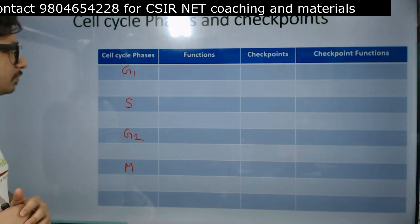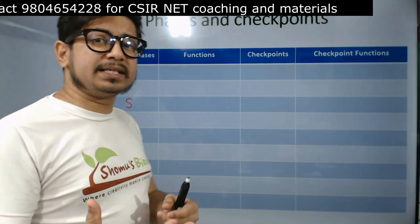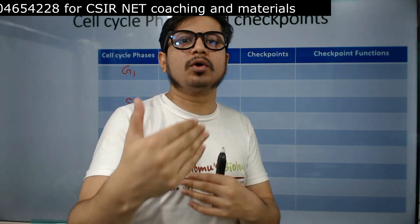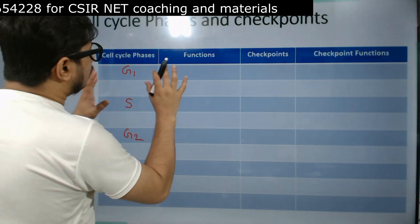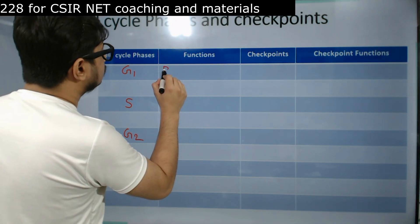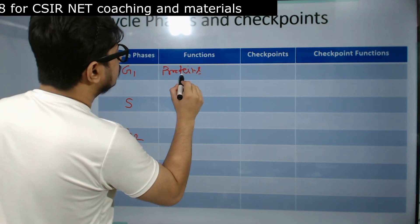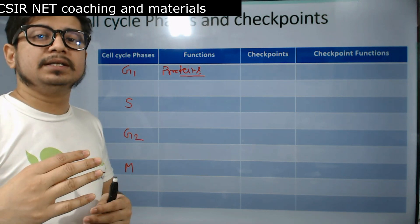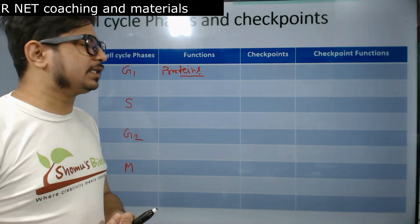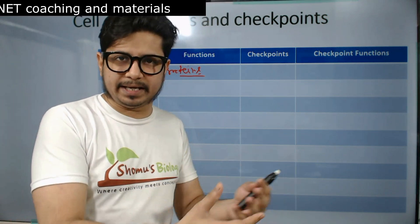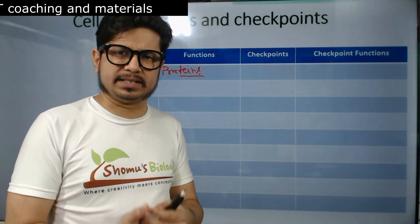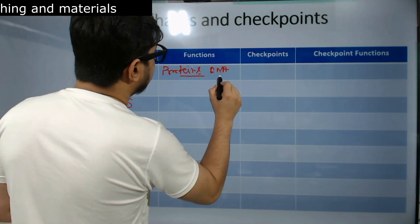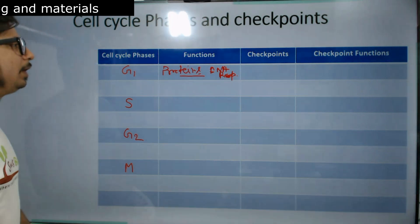G1 and G2 can be called growth phase or gap phase, but I prefer to remember them as growth phases. In G1 phase, proteins are produced — mRNAs are first produced, then proteins — specifically the proteins necessary for DNA replication. Examples include DNA helicase and primase. All these important proteins needed for the replication process are produced during G1 phase.